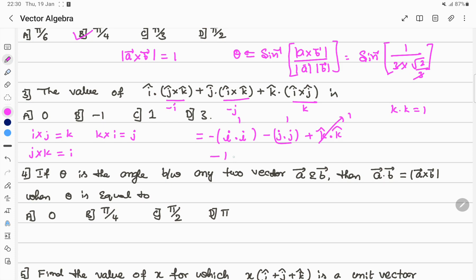Observe: k dot k means same vector, this quantity equals 1, this also equals 1. But here minus 1 minus 1 plus 1, which gives the answer option B.